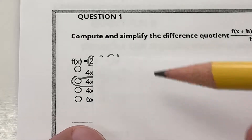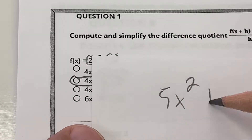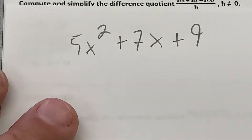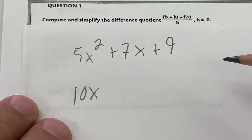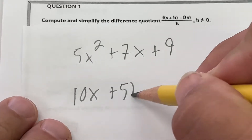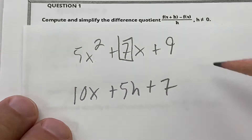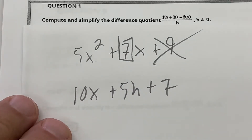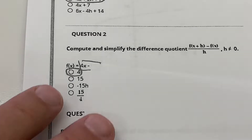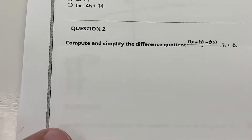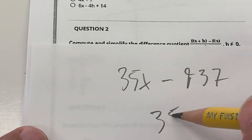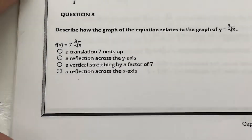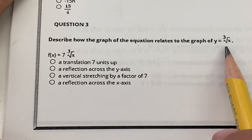The more difficult version — like number one — would be something like 5x² + 7x + 9. Applying the shortcut: 2 times 5 is 10x, the 5 in front of x² gives plus 5h, and the 7x just goes to 7. For something like 35x − 937, the difference quotient would just be 35.